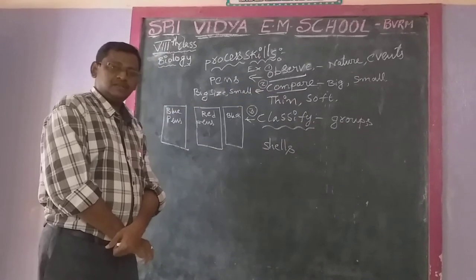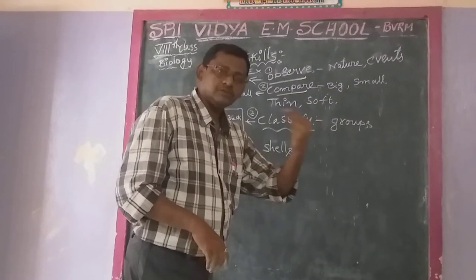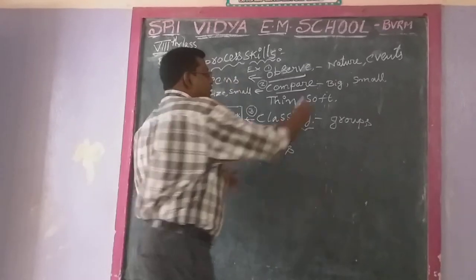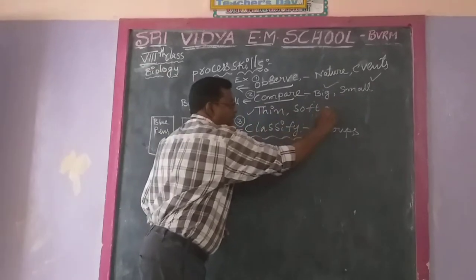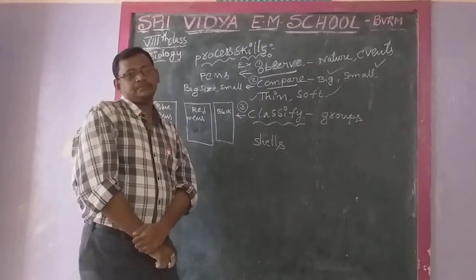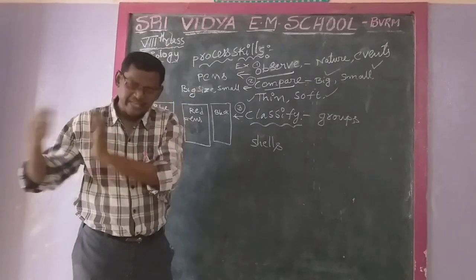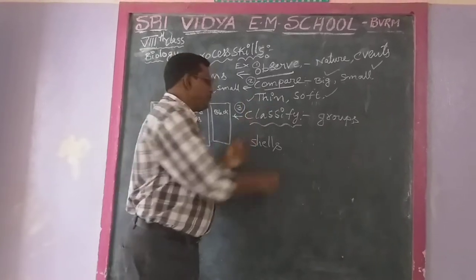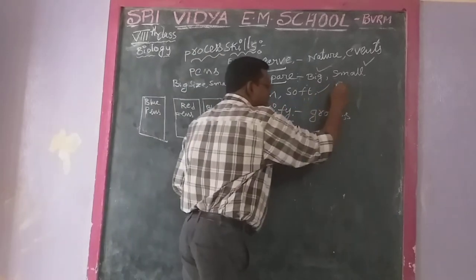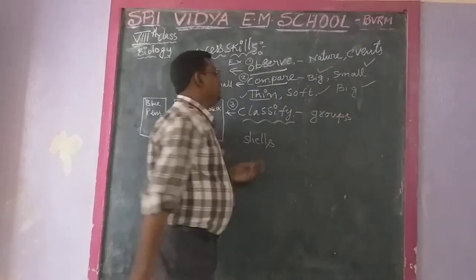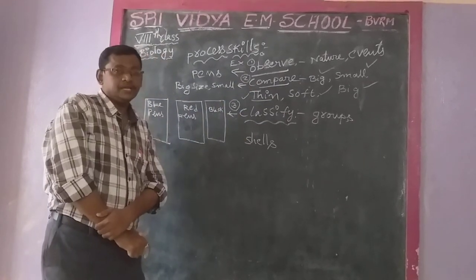Then comes comparison. When you observe anything, how do we compare? Either big or small, either thin or soft. Some animals are very big and some are very small. Some plants are very thin and some are very soft. Some are very large. This is called comparison — we compare objects with each other.